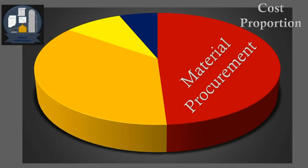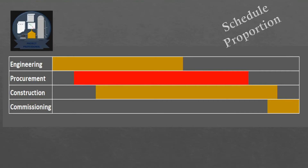The third topic is the proportion of procurement in oil and gas projects, both with respect to cost and schedule. The proportion of material procurement in a project is quite high. With respect to cost, it has been observed many times that it exceeds 50%. Similarly, with respect to schedule, the proportion is also often more than 50%.